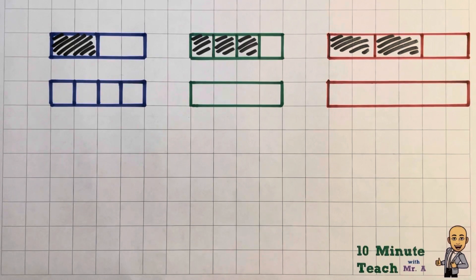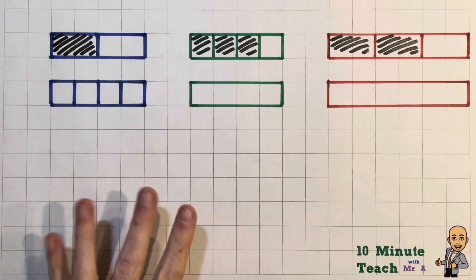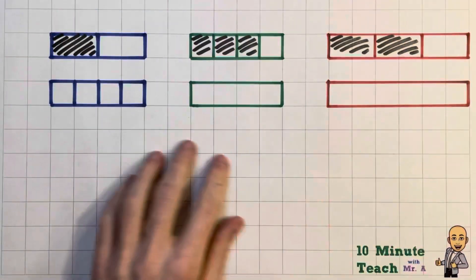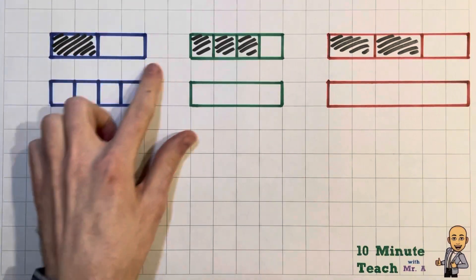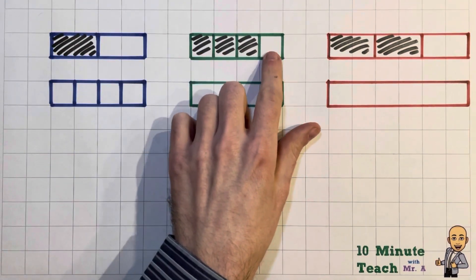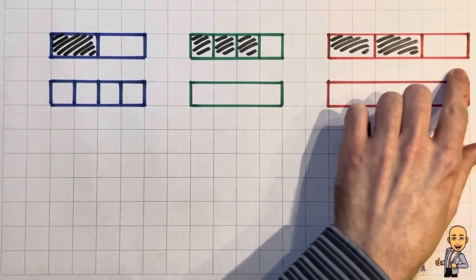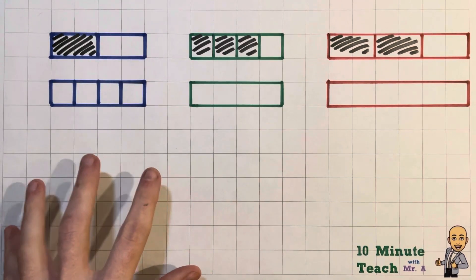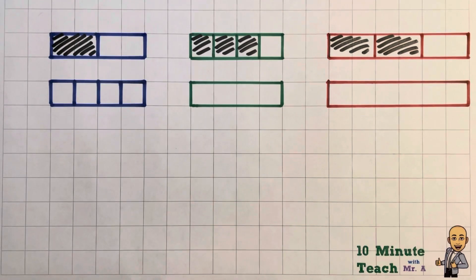Hi guys and welcome to another 10 Minute Teach with Mr A. In today's lesson we're going to be looking at equivalent fractions and I've got a couple of examples here. The really important thing to remember with equivalent is that it has the word equal in the title as well. So you're looking for a fraction that is equal to another fraction.